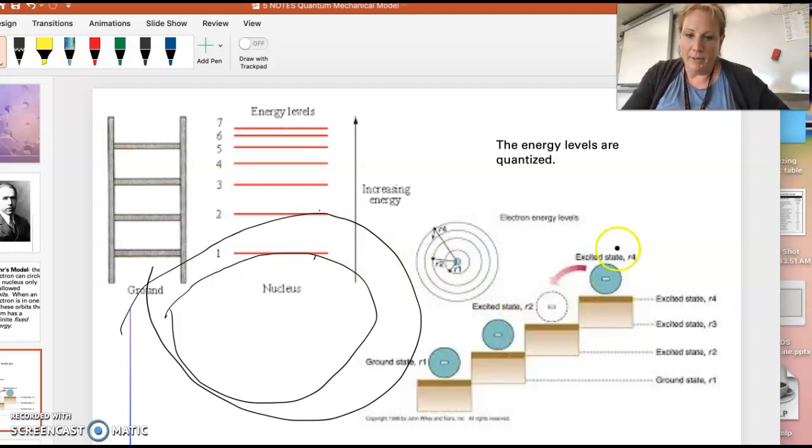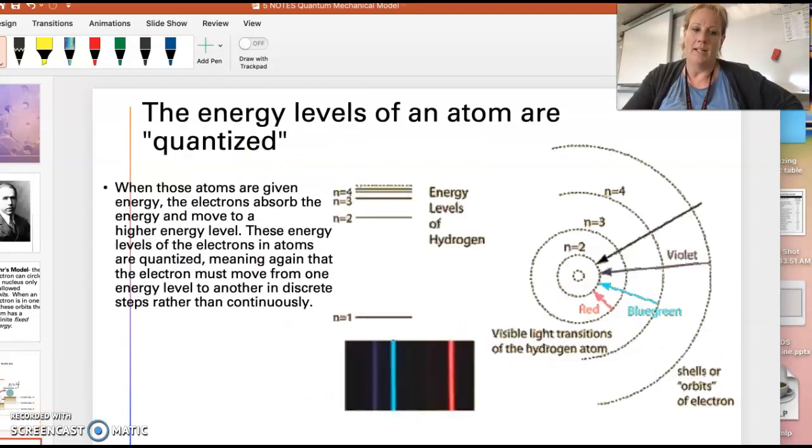Here's another, not the best image, but kind of trying to show you that an electron, like this would be an electron going from n equals 4, maybe to n equals 3. But it can never be here, like at n equals 3.6. It has to be in one spot or another. And that's what it means to be quantized.